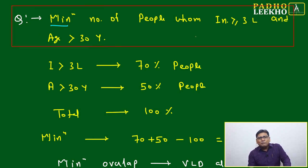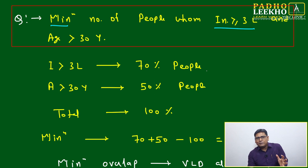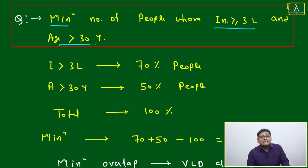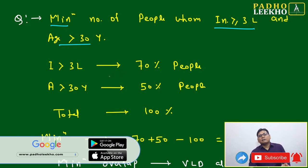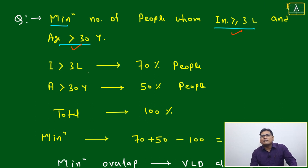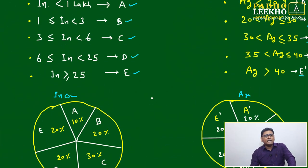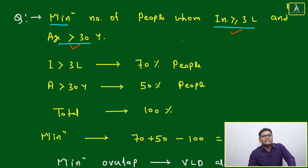Let's take one question to understand. The question asks: what is the minimum number of people out of 1 crore whose income is more than or equal to 3 lakhs AND whose age is more than 30 years? We need to find the minimum number of people satisfying both criteria simultaneously.